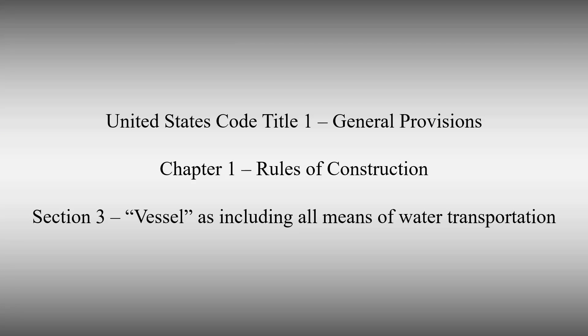United States Code Title I, General Provisions. Chapter 1, Rules of Construction. Section 3: Vessel as including all means of water transportation.